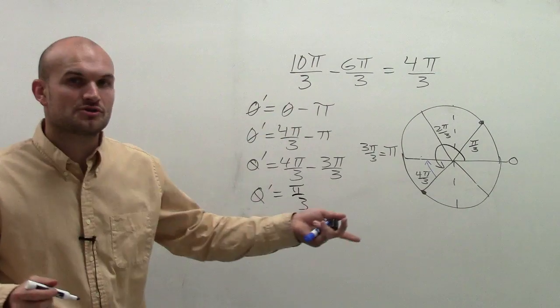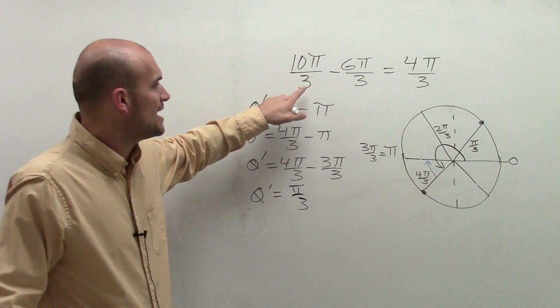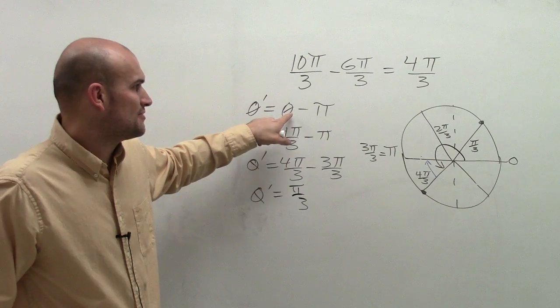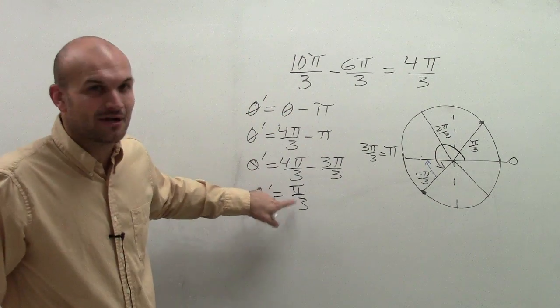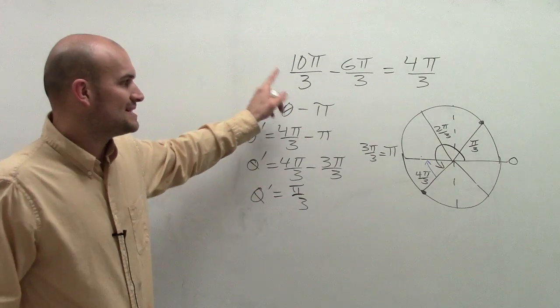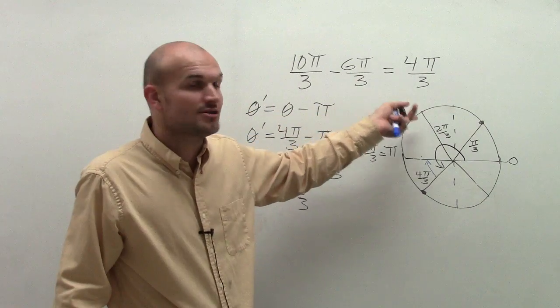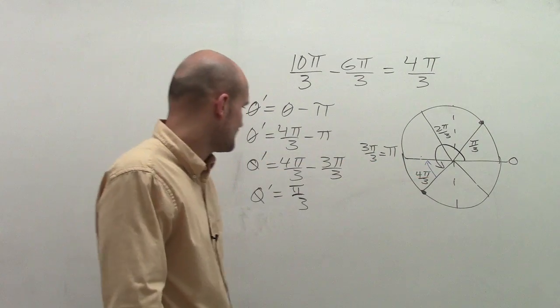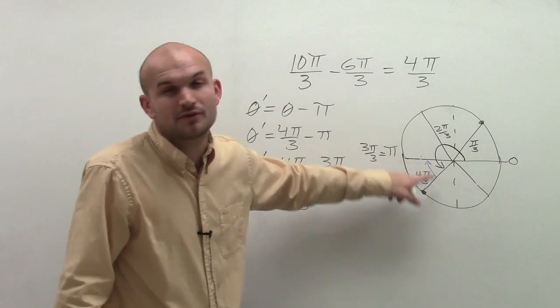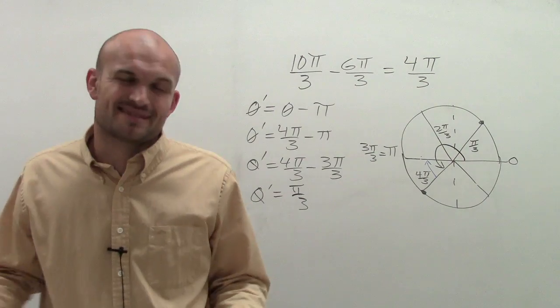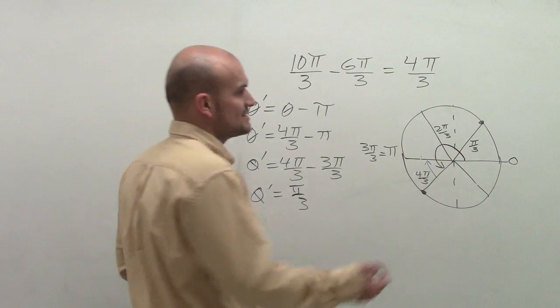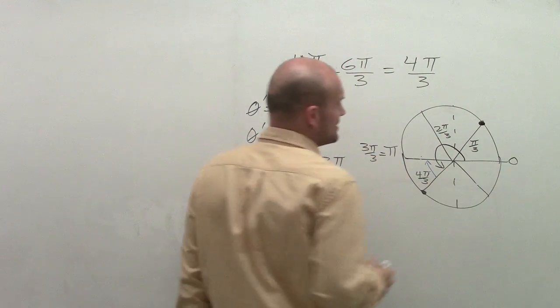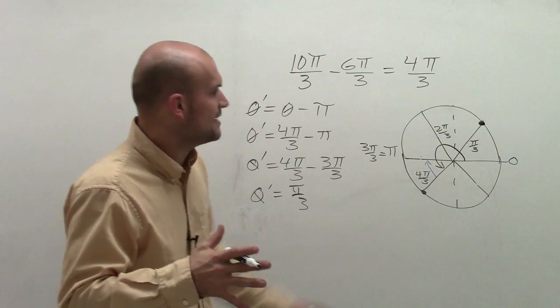Now, the reason why I had to do coterminal angles is because if you were to plug in 10π/3 for your θ, you wouldn't get an acute angle. π/3 is an acute angle. That's why it's important to make sure we use coterminal angles to find an angle that's between 0 and 2π to help us find that reference angle.